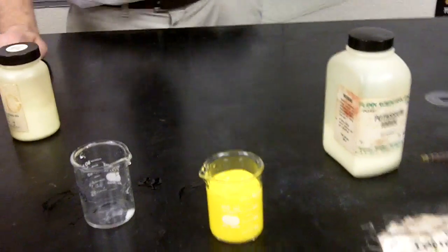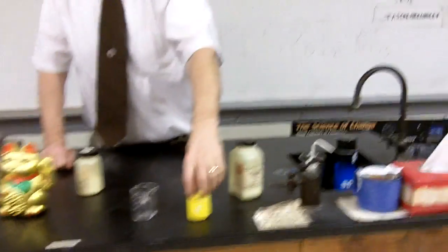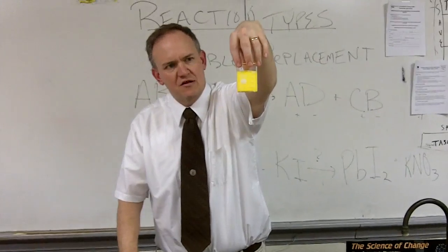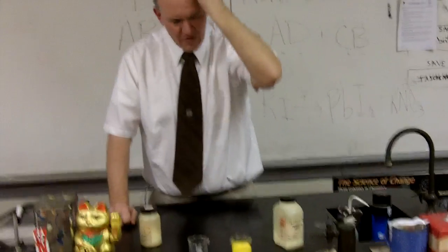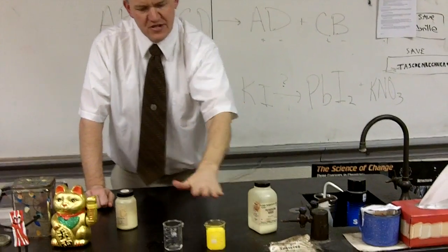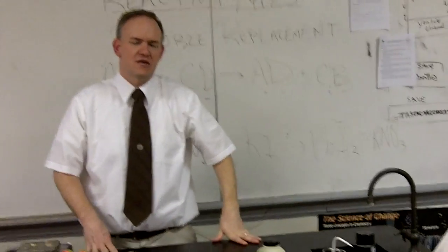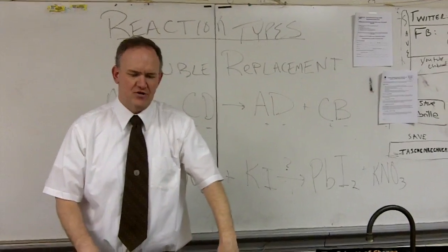The potassium nitrate you won't see because it actually remains dissolved. It's soluble, just like the stuff we started with. And if we let that sit overnight, tomorrow we could come in and we could see all that yellow powder has sunk to the bottom. And so that would be a double replacement reaction.